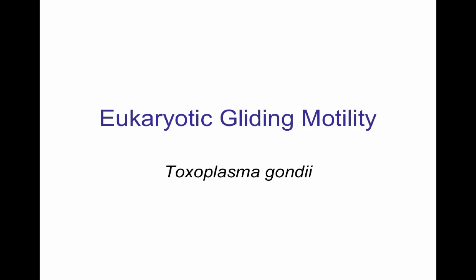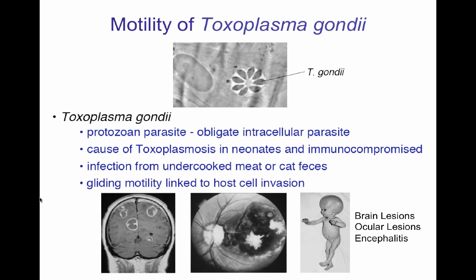Now let's look at a parasitic microorganism, Toxoplasma gondii, and how it shows gliding motility. Toxoplasma gondii is a protozoan parasite — an obligatory intracellular parasite — and it causes the disease Toxoplasmosis. As seen in this neonate, Toxoplasmosis generates encephalitis and can form lesions in the brain.